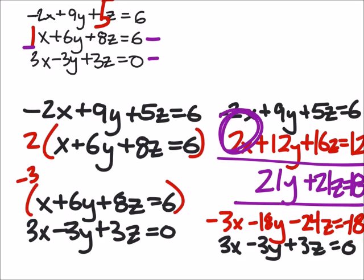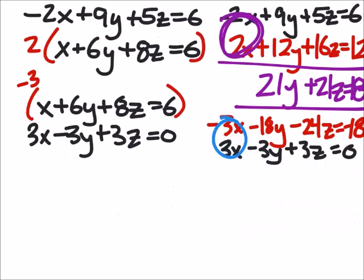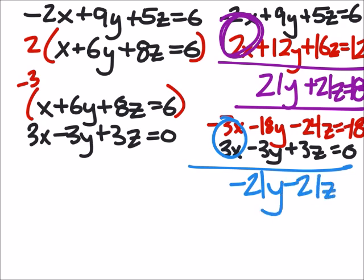And from here, I'm just going to combine these two equations. That red and the black one define a new equation, which will have eliminated these x's. So what does that give us? Negative 21y minus 21z equals negative 18.